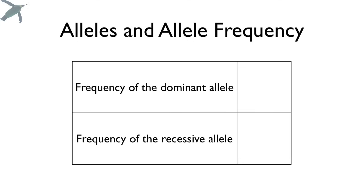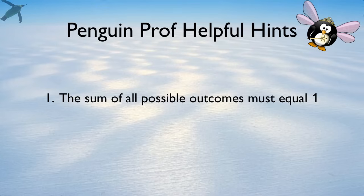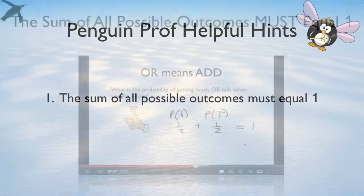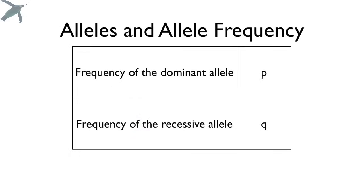Here are the nuts and bolts of how we're going to do this. The frequency of the dominant allele is designated by the letter P, and the frequency of the recessive allele is designated by Q. The first helpful hint: the sum of all possible outcomes must equal 1. This is true for frequencies — if you've got one dominant allele and one recessive allele, their frequencies must add up to 1, because you've got to have one or the other when only two alleles are involved.